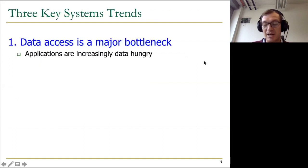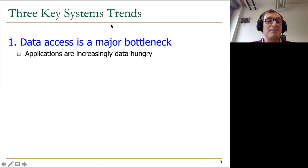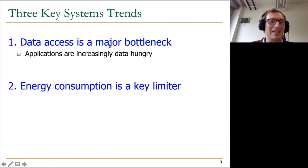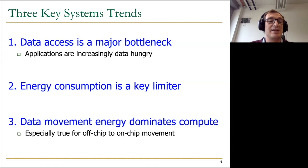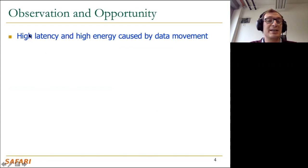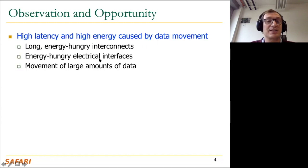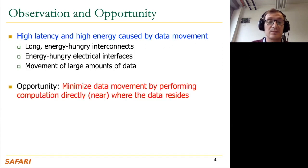In today's systems and applications, data access is a major bottleneck. Energy consumption is a key limiter, and data movement energy dominates computation energy — this is true for off-chip to on-chip movements. The observation is that high latency and high energy are really caused by data movements. Today we have long, energy-hungry interconnects between processor and memory, energy-hungry electrical interfaces, and we move large amounts of data on those interconnects. So the opportunity is to minimize data movement by performing computation directly inside or near where the data resides.